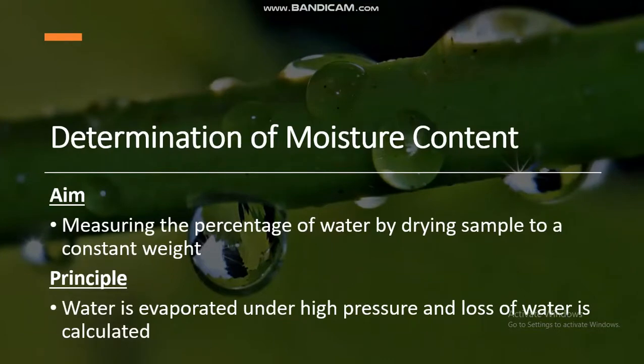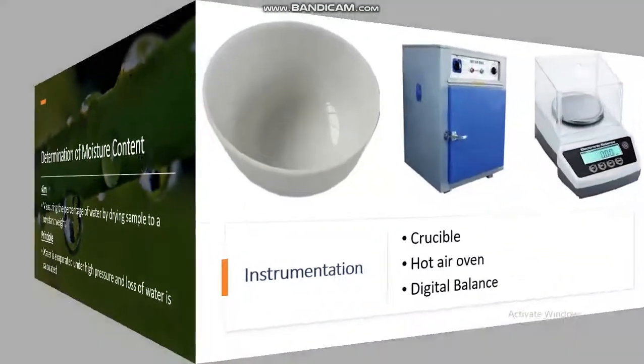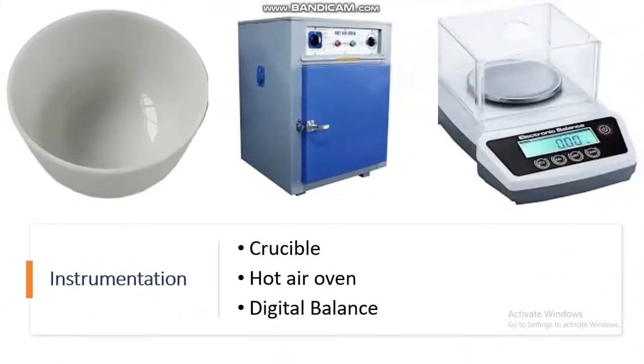The first topic is the determination of moisture content. The aim of this study is measuring the percentage of water by drying a sample to a constant weight. The principle is that water is evaporated under high temperature and the loss of water is calculated. Instruments used are a crucible, hot air oven, and digital balance.